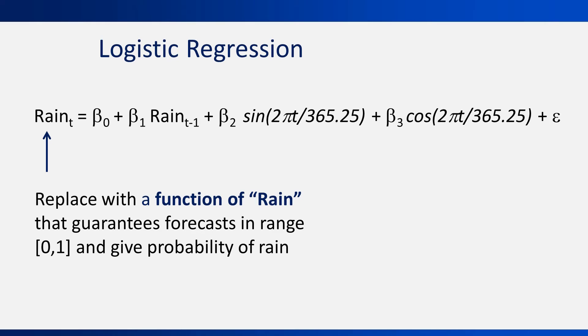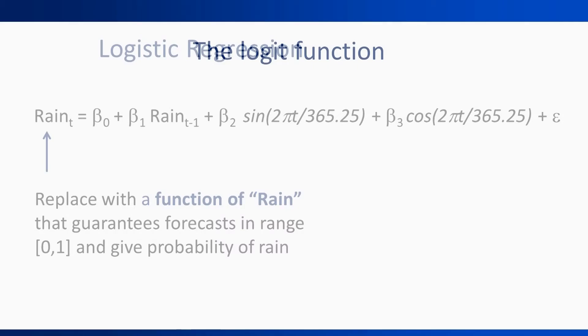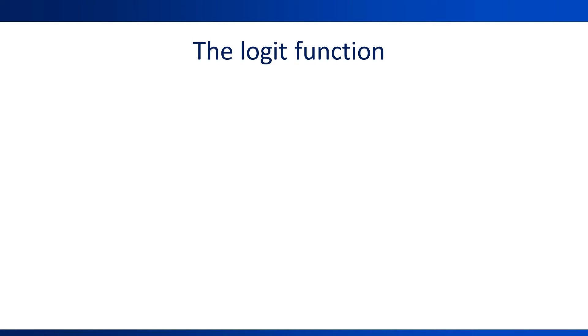The difference between linear and logistic regression is on the left-hand side of the equation. Instead of directly using the column rain, which is a binary column, we use a function of rain that will eventually give us forecasted probabilities that are between 0 and 1. The special function is called the logit function. It's special because it can convert a binary variable into a continuous variable that can take any value from negative infinity to infinity.